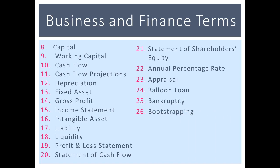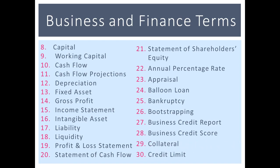Bankruptcy refers to the reduction or repayment of debts. Bootstrapping means using your own money to finance the startup or growth of a business — think of it as being your own investor, reinvesting what you earn. A business credit report is similar to a personal credit report; lenders look at it to determine risk factors when making business loans. Credit score is calculated based on information found in the business credit report. Collateral is any asset pledged as security on a loan.